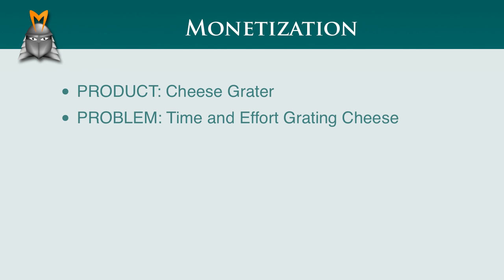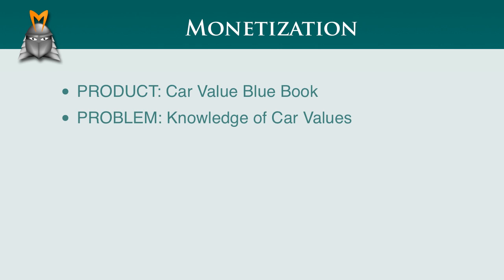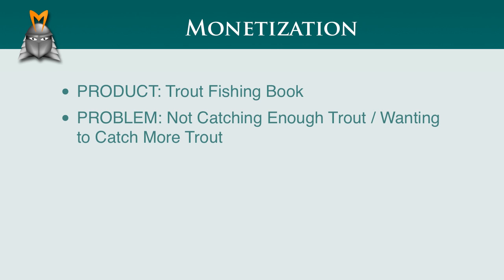Let's have a look at a few examples. When people buy a cheese grater, it's not because they have a cheese problem — it's because they have a time and effort problem. Cutting up cheese into tiny little pieces by hand takes a lot of effort, so one way to sell it would be to talk about how much time and effort it saves. If you were selling a blue book, a car price guide, people buy it to solve a knowledge problem — they want to know what a car is worth so they can get a fair price. In this example, I'm selling a trout fishing book, and the reason someone might buy it is to catch more trout. So let's look for chunks of copy along these lines.